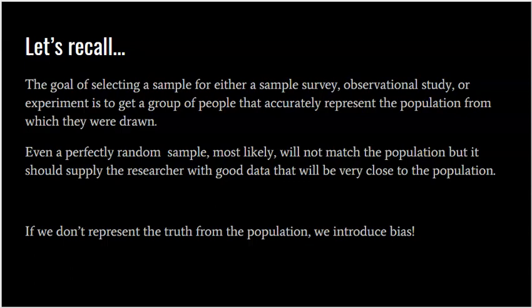If we don't represent the truth from the population, we introduce bias. The goal is for our sample mean to be a good reflection of the population mean, or our sample proportion to be a good reflection of the population proportion. If anything allows that representation to not be good, it introduces bias.